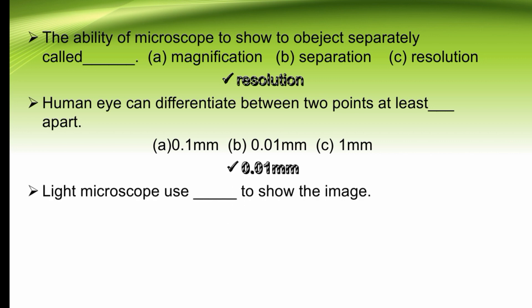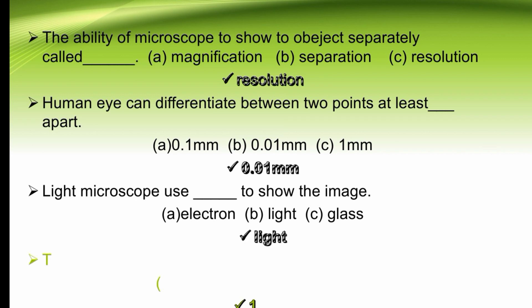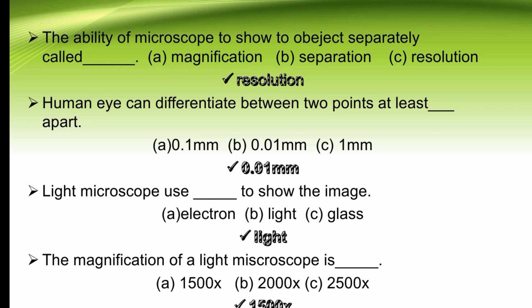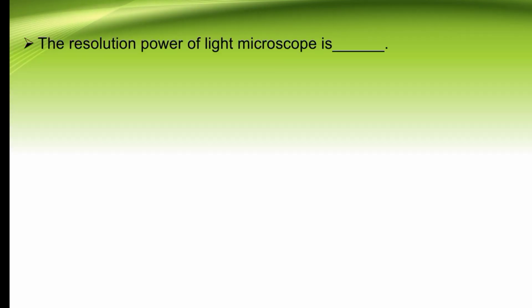Our next MCQ: light microscope uses dash to show the image — electron, light, or glass. It is a light microscope, so the right option is B, light. A light microscope uses light to show the image. The magnification of a light microscope is dash — 1500x, 20000x, or 2500x. The right option is 1500x. The resolution power of a light microscope is dash — one micrometer or two micrometers. The right option is B, two micrometers.